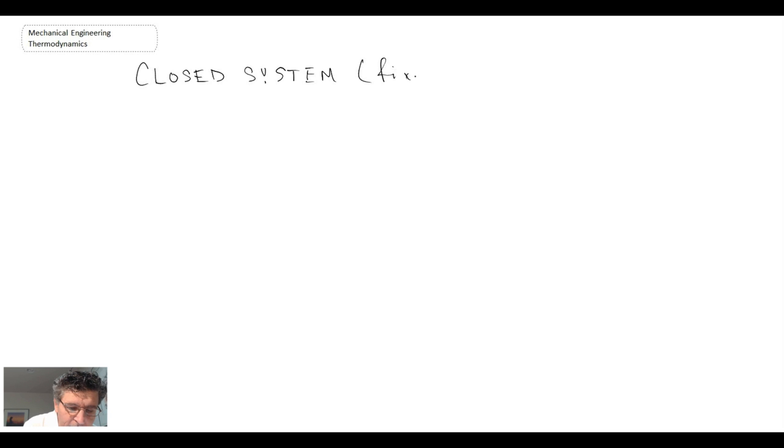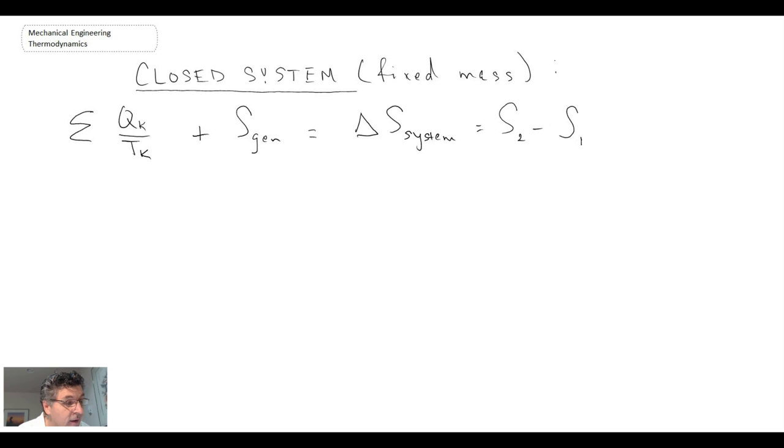And this is also referred to as being a fixed mass system. So the equation for this will be the sum of the heat transfer that is taking place across our boundary plus any kind of generation, and then that is equal to the change of the system. So that would be quantified by entropy at state 2 minus entropy at state 1, if we were going through a process. The units of this are kilojoules per kelvin.